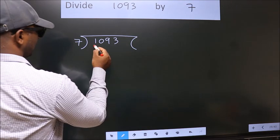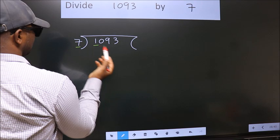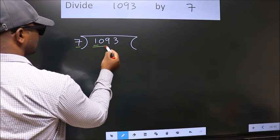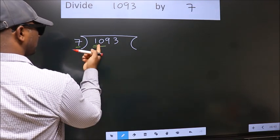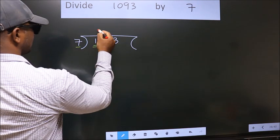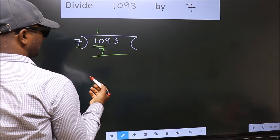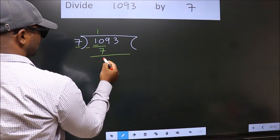Here we have 1, here 7. 1 smaller than 7. So we should take 2 numbers, 10. A number close to 10 in 7 table is 7 ones, 7. Now we should subtract. We get 3.